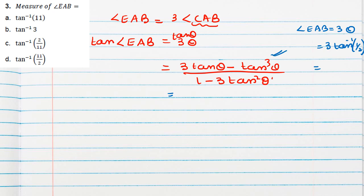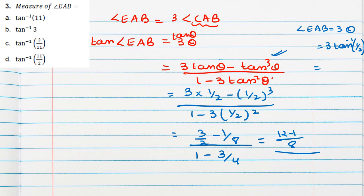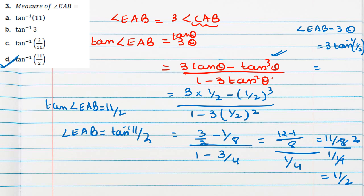So we can apply trigonometric formula also. Tan theta value we can substitute which is 1 by 2. So here 3 by 2 minus 1 by 8 in numerator we will get. Here 3 by 4. So cross multiply or take LCM it will give 12 minus 1 by 8 and here 1 by 4. So this will be 11 by 8 and 1 by 4. So 4 to the 8 if you cancel 11 by 2. So this is actually tan of angle EAB is 11 by 2. So EAB will be tan inverse 11 by 2 which is in option D. So option D will be correct.